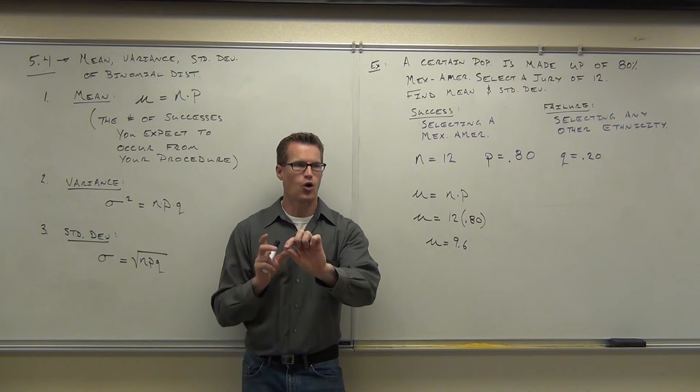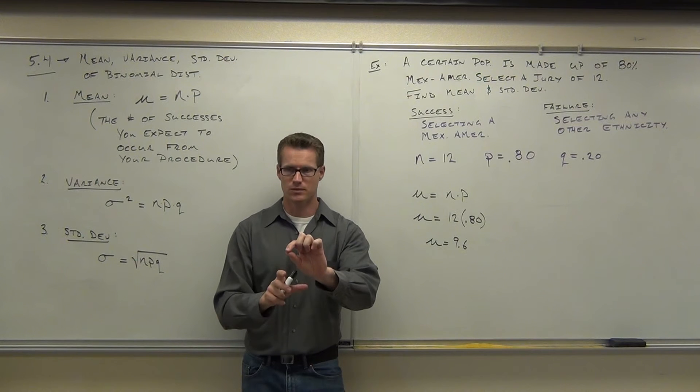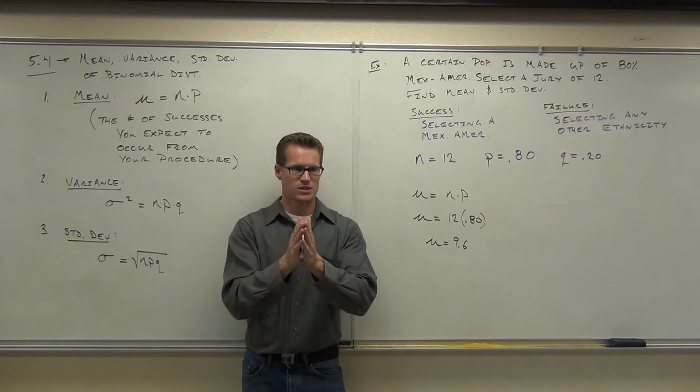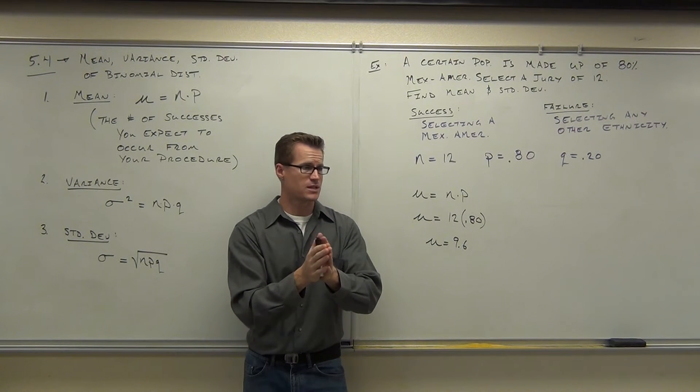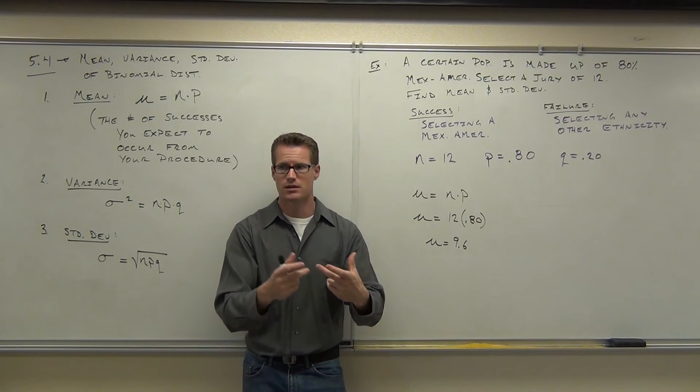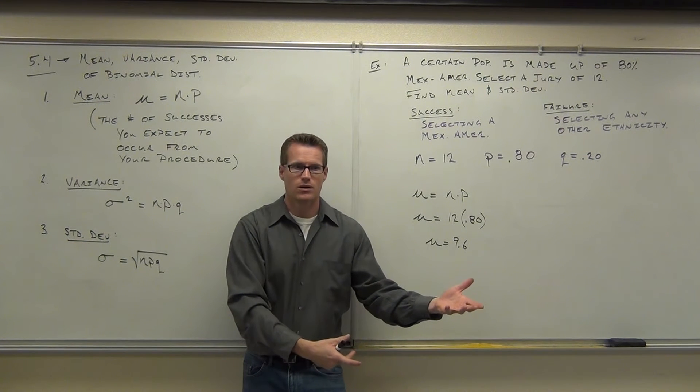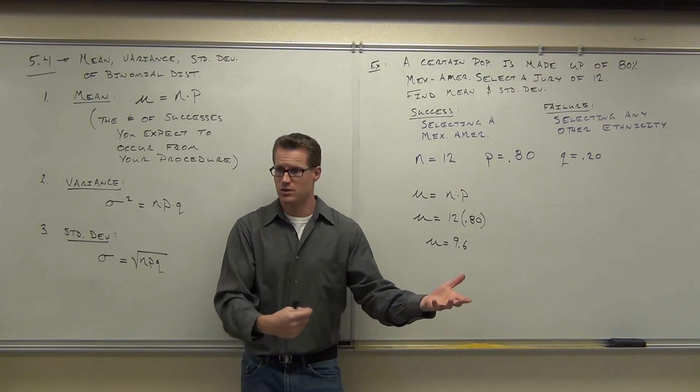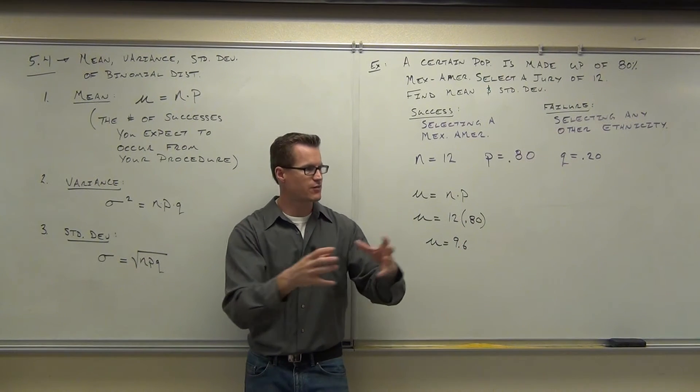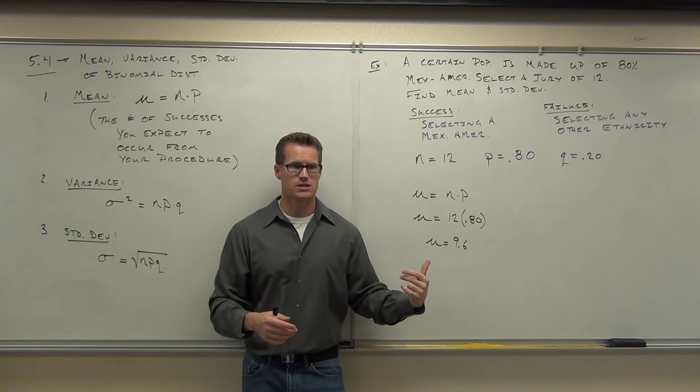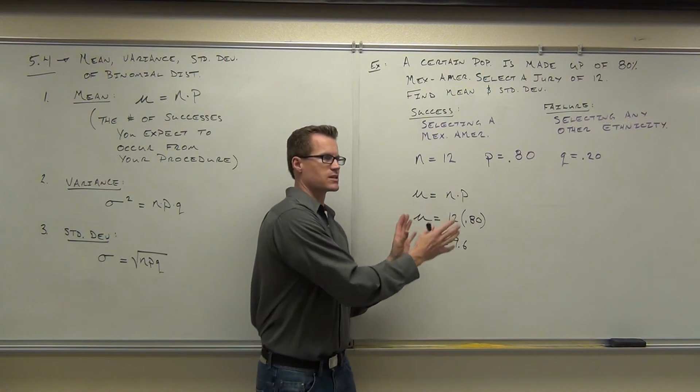I'm going to change what you said just a little bit. If you selected a whole bunch of juries of 12 people, you'd get somewhere around 9.6 on average. So that means that some you'll get 9. Some you'll get 10. You might even get 12, right? You might get zero. It's going to not happen very often if you're doing this correctly. But on average, if you average everything together, your average number of Mexican-Americans per jury would be 9.6.